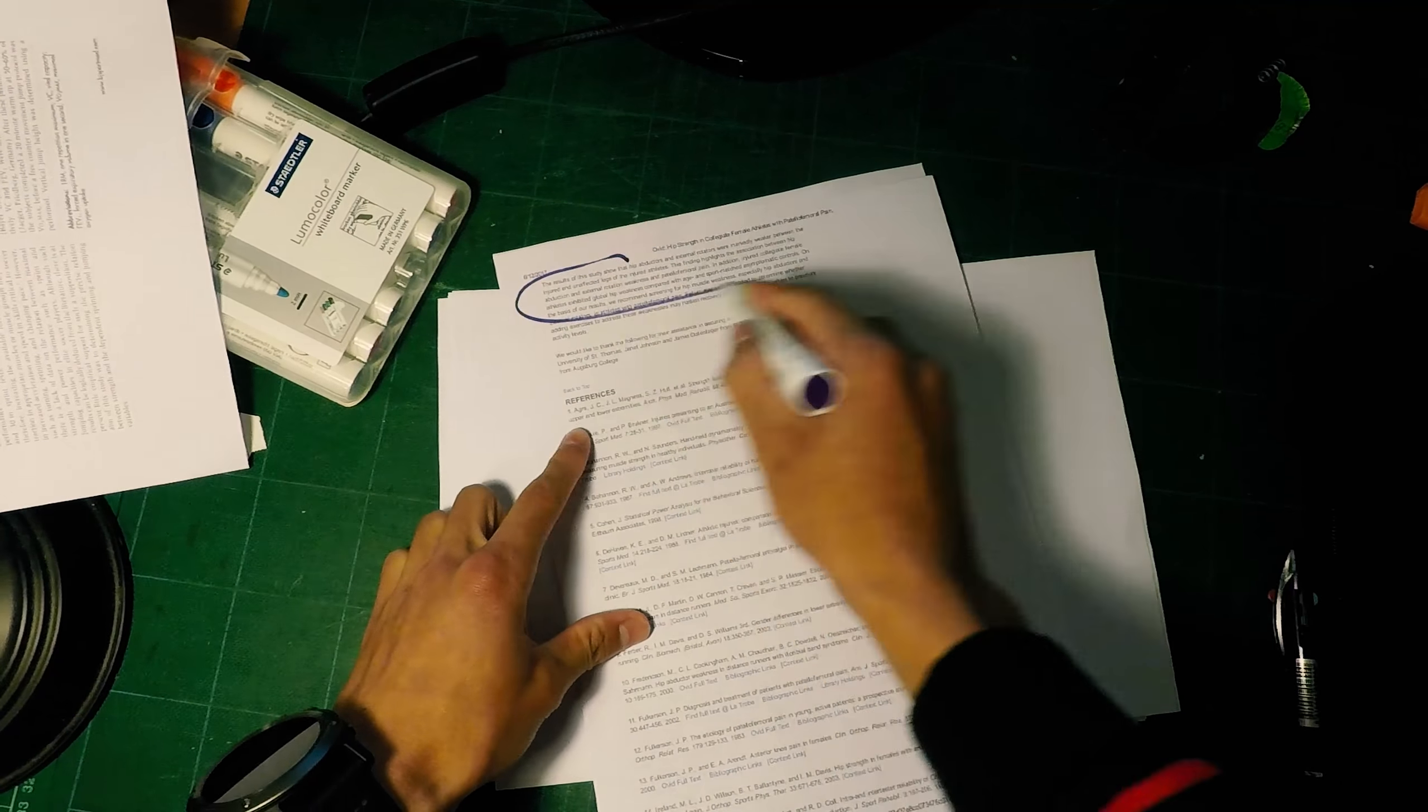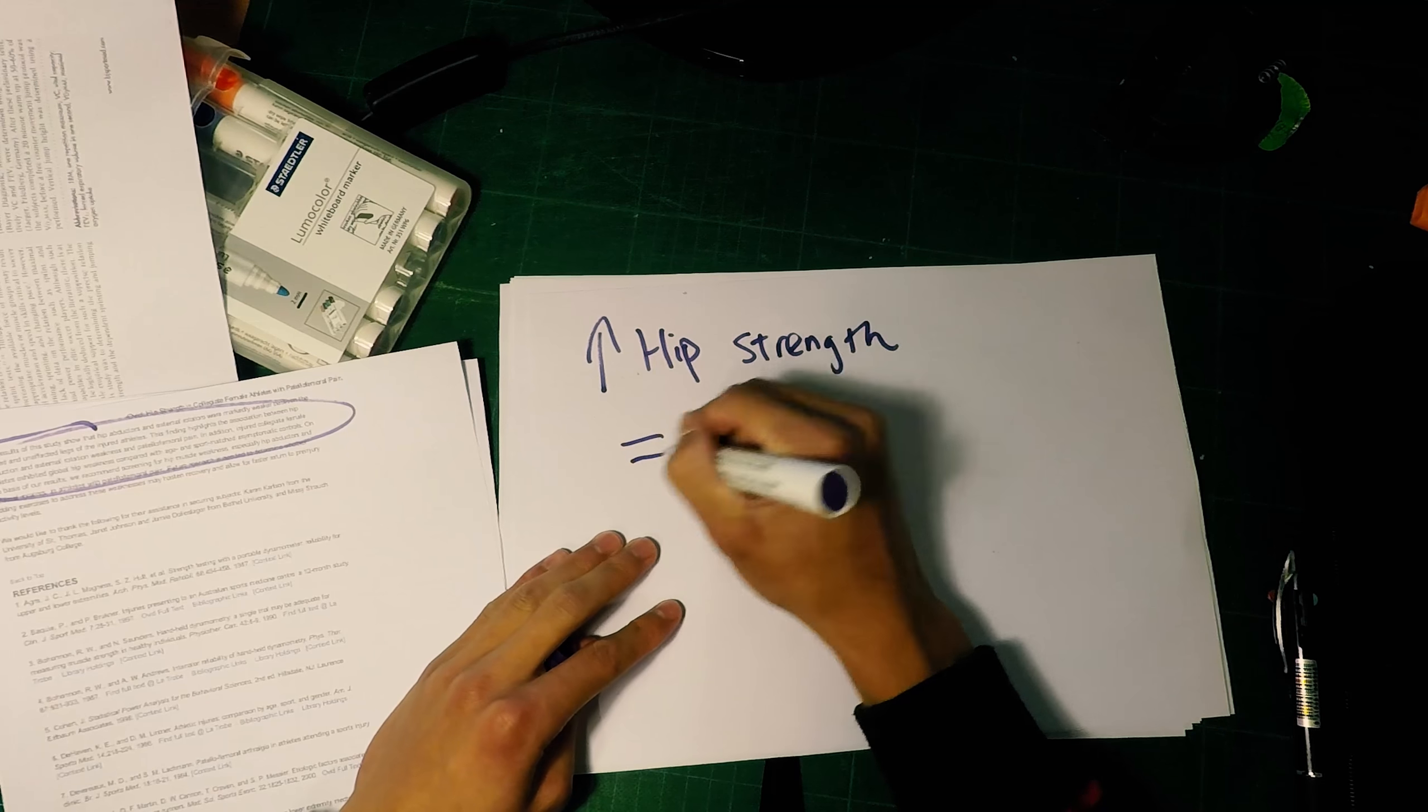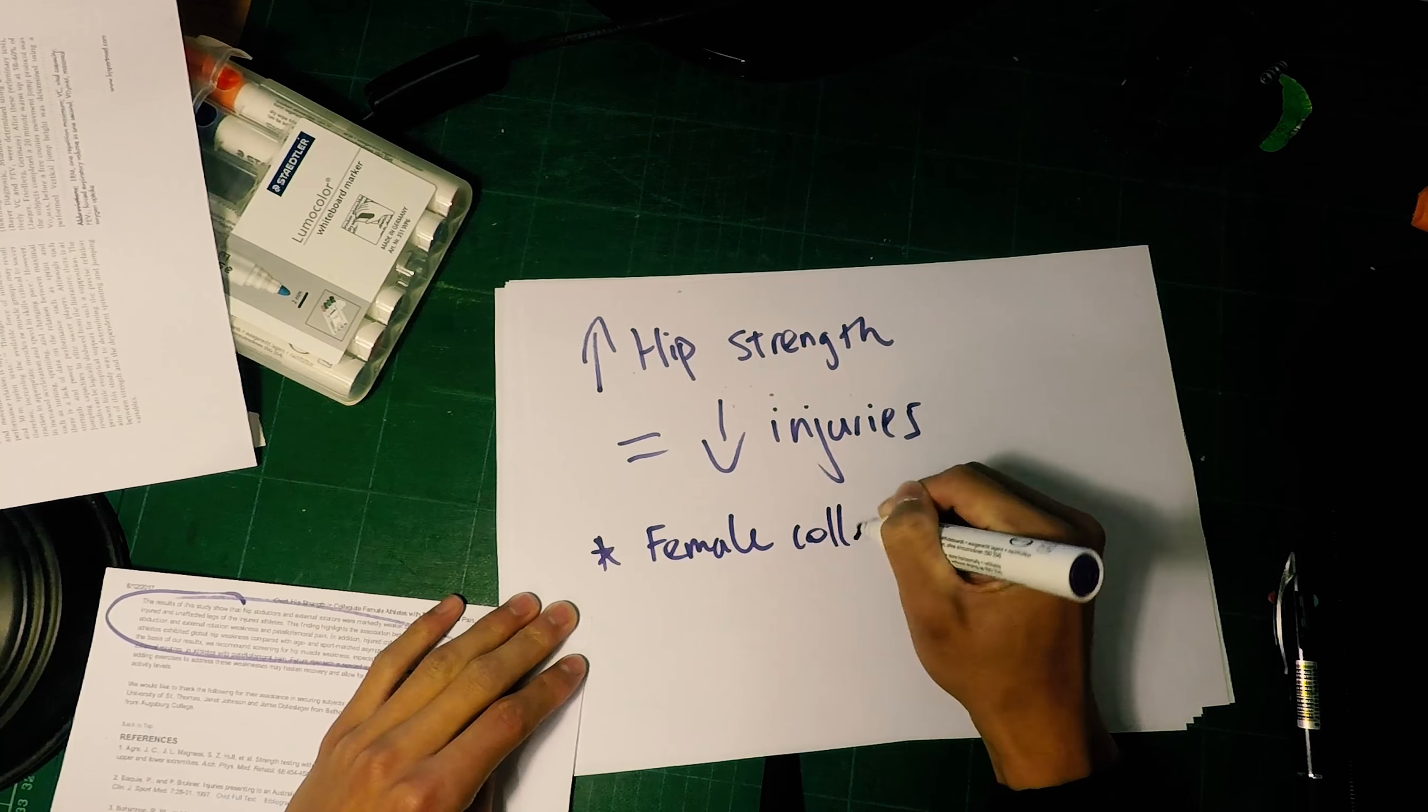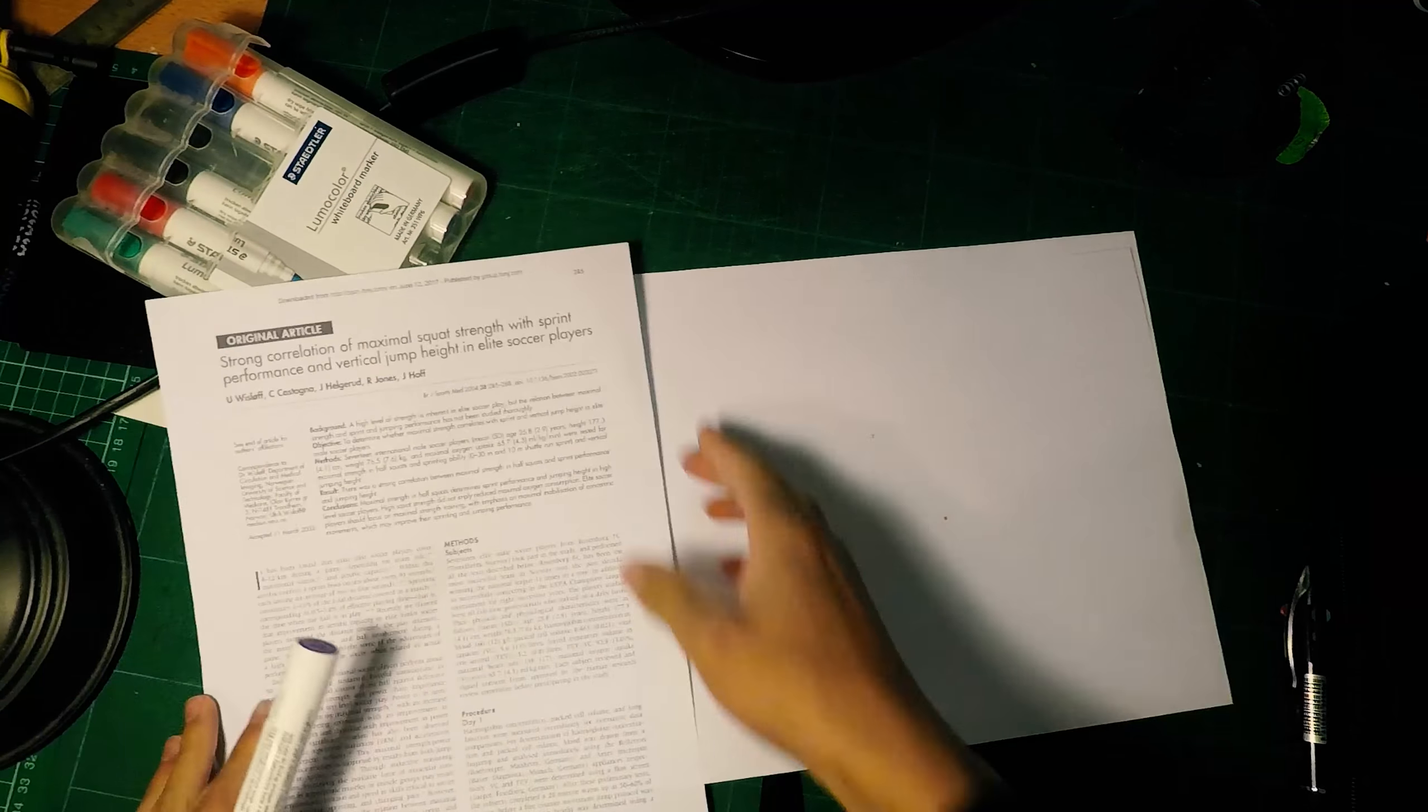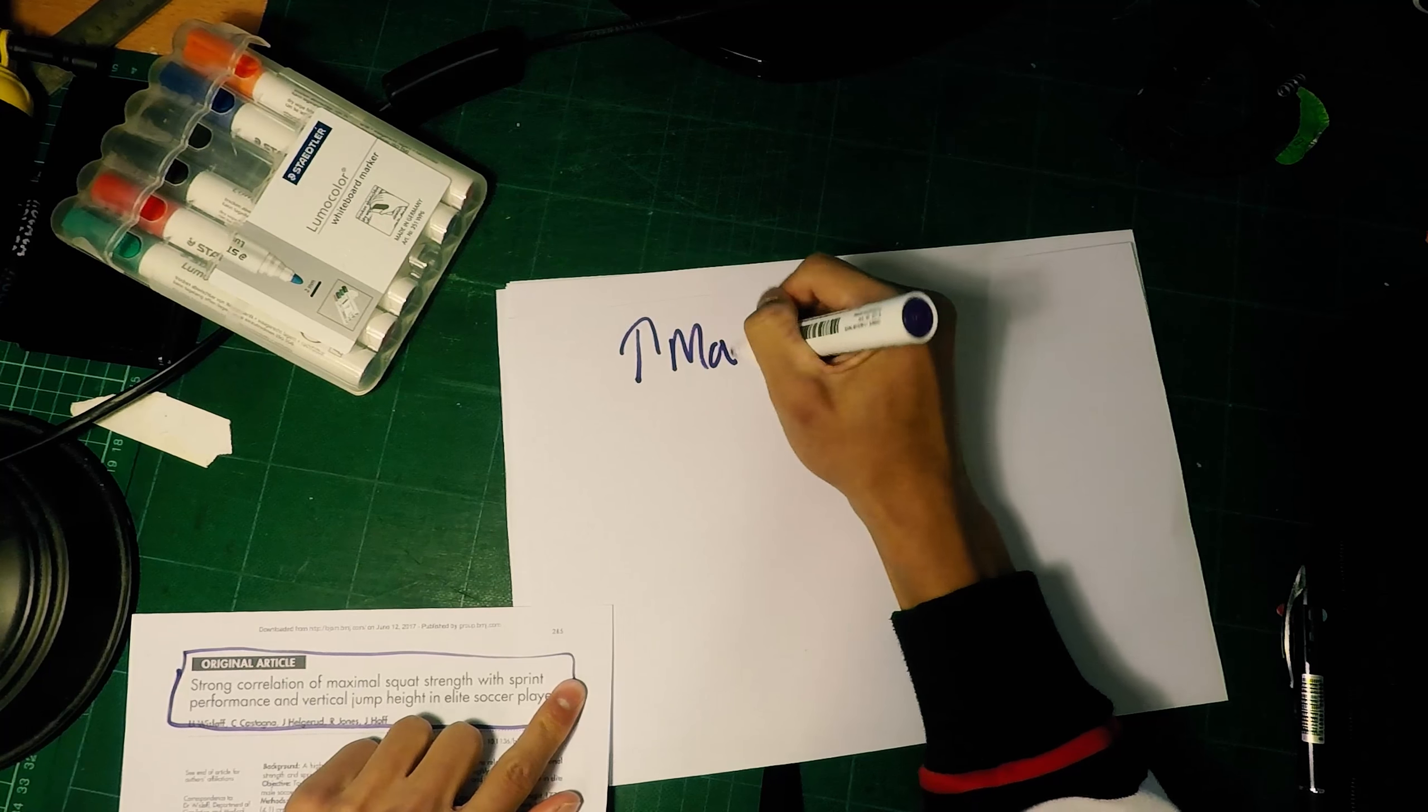And this study here—I'll just get to the conclusion—basically says that increased hip strength means decreased injury. That's basically what it's saying. It's talking about female college athletes, but I'm pretty sure this will apply to everyone.